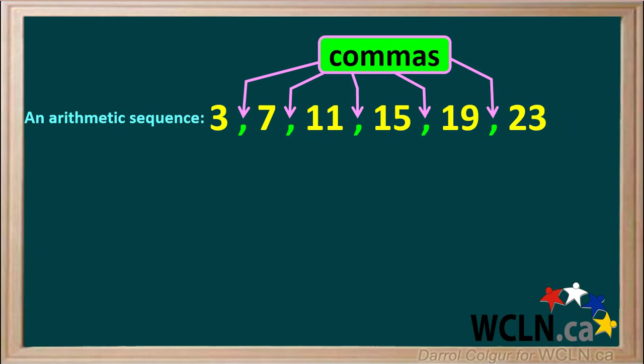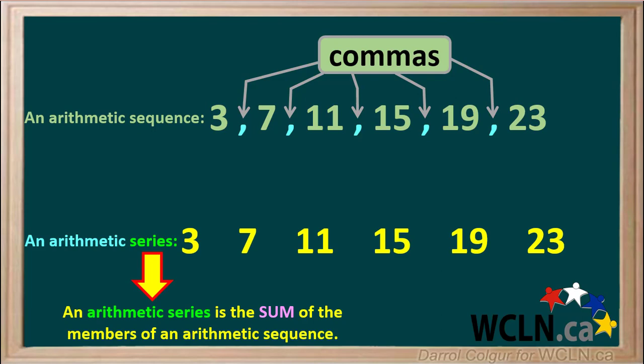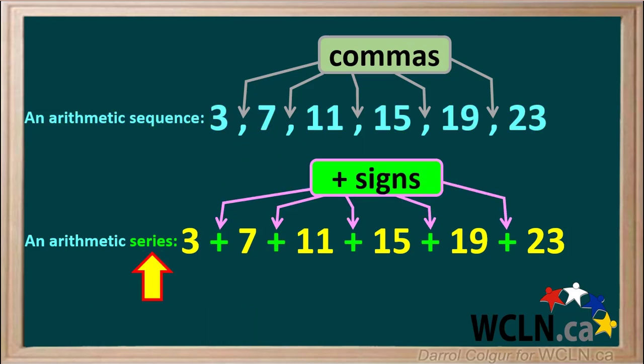Notice that in an arithmetic sequence, there are commas between each term. But an arithmetic series is the sum of the members or numbers in the series, so the commas are replaced by plus signs. So in an arithmetic series, there are plus signs between each term.